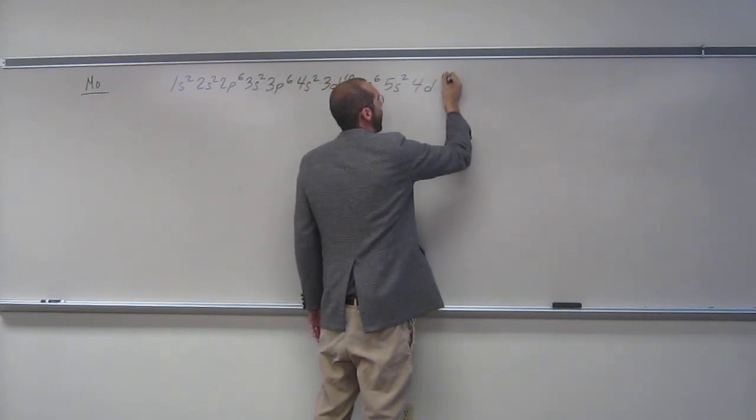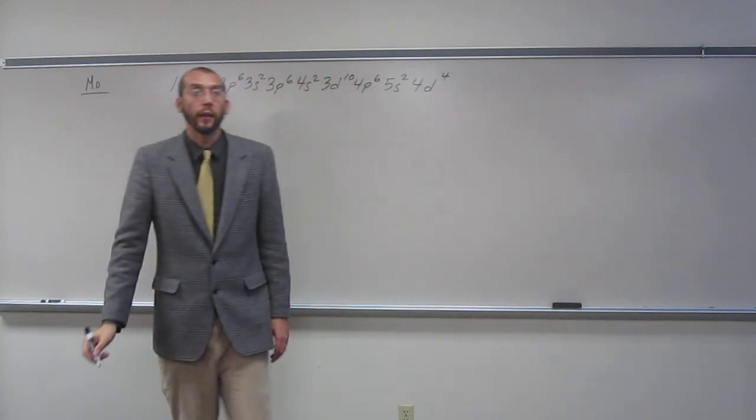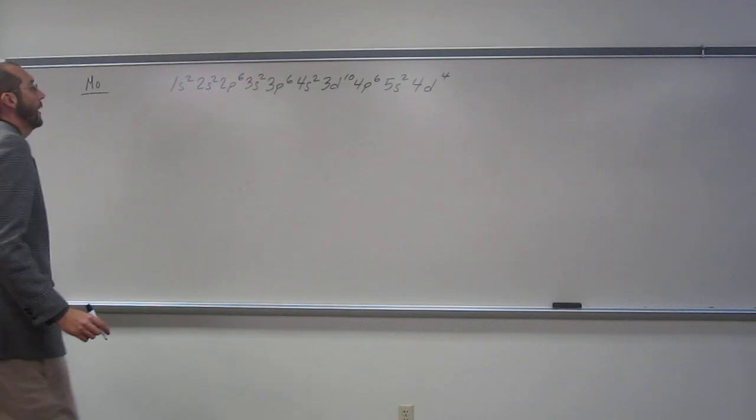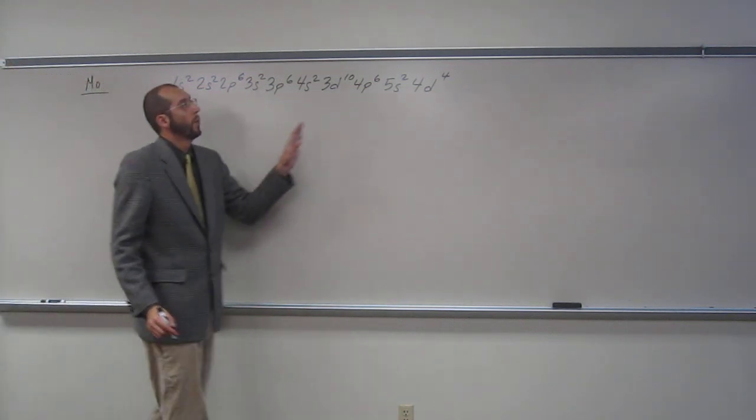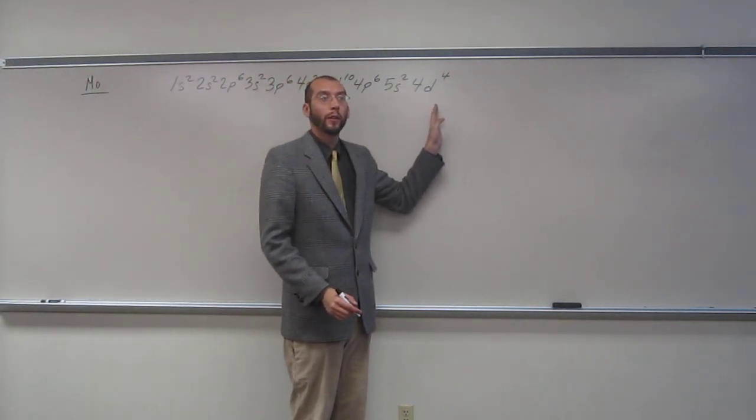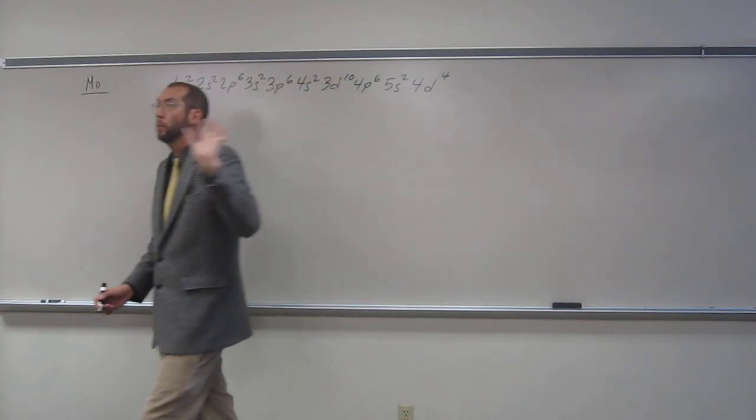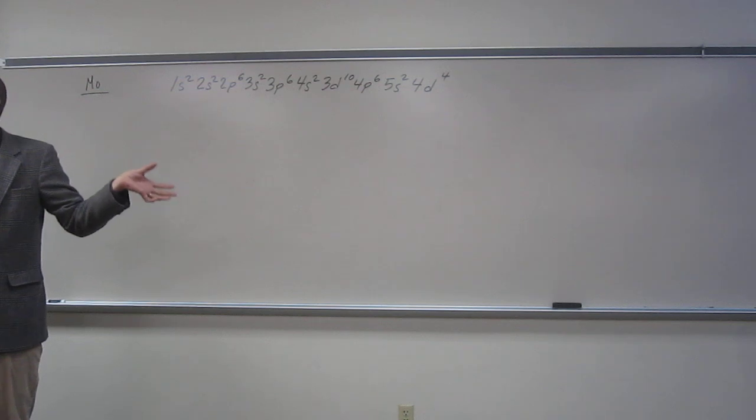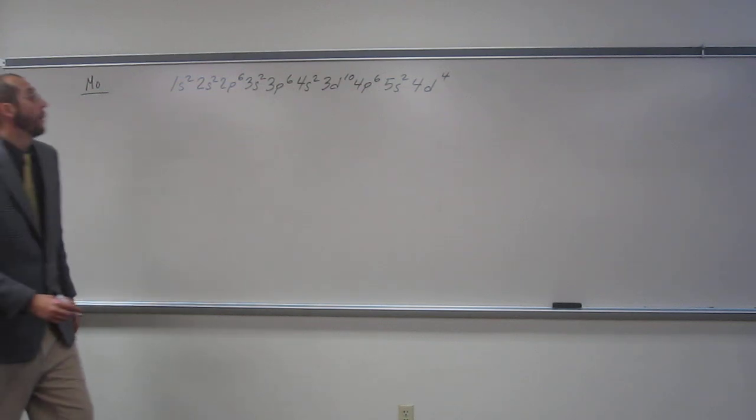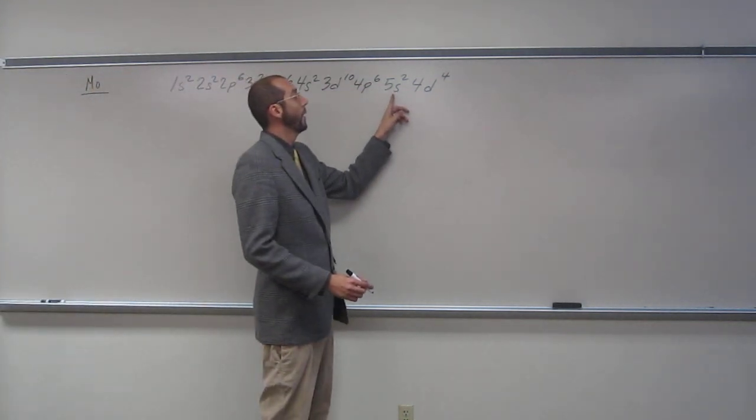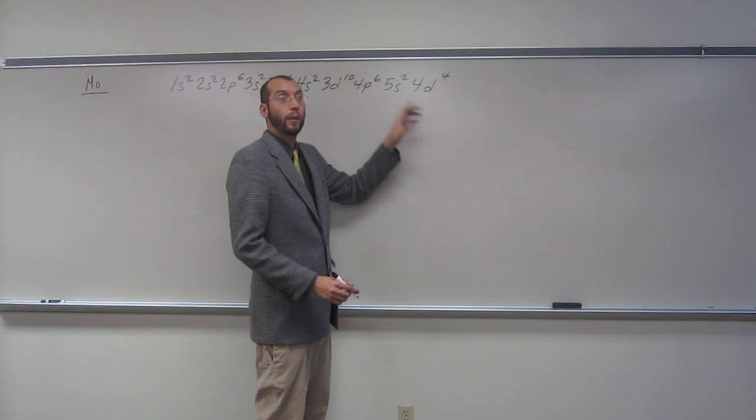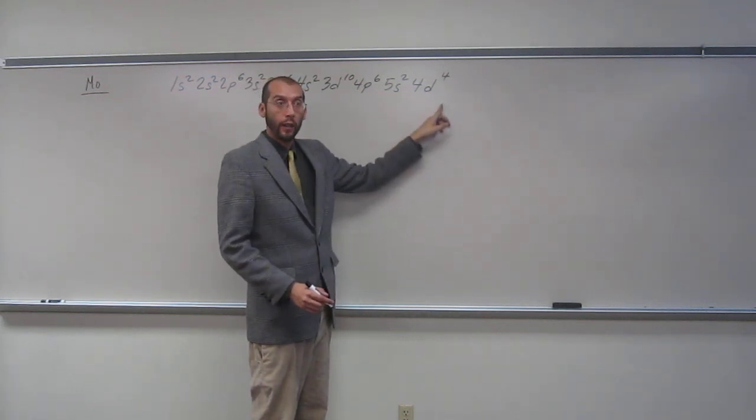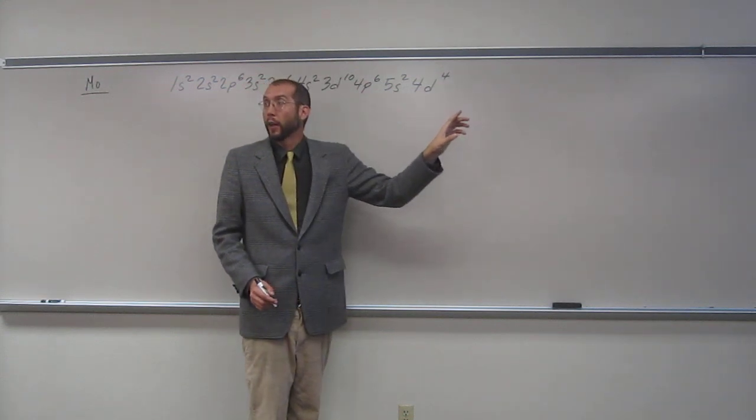5s2, 4d4 is what you would expect it to be, that's what you would expect it to be, right? The thing is, is when you have these half filled d orbitals, molybdenum and chromium will act weird. So, what they'll do is they'll take one of their s electrons in the previous s orbital and add it to the d electron subset.